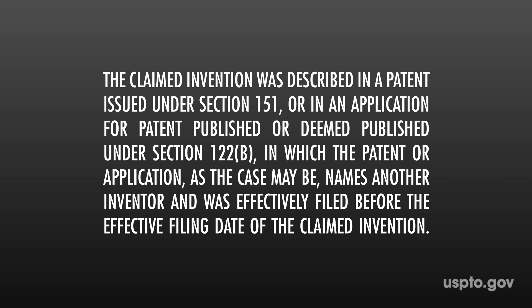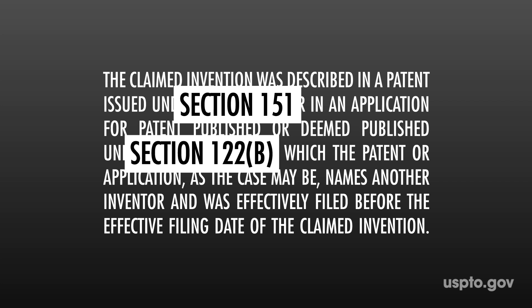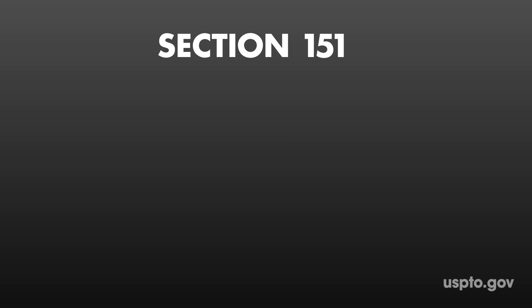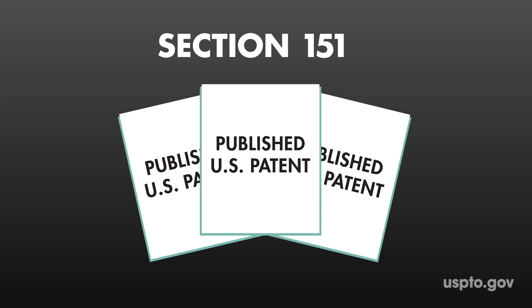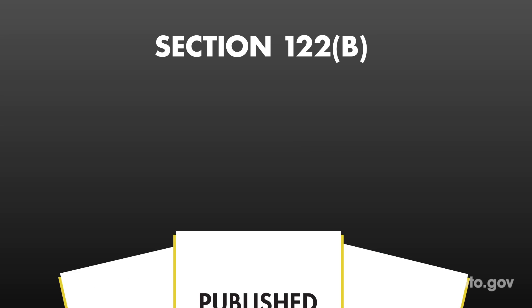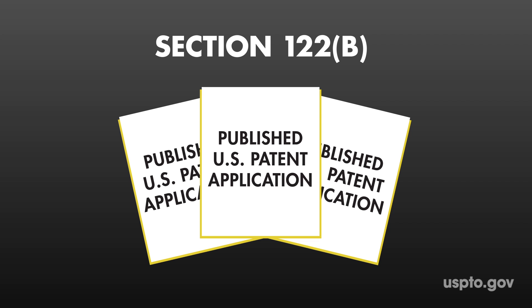We need to look at a couple of things to understand this. See where it says Sections 151 and 122B? These are other sections of patent law. Section 151 refers to published U.S. patents. Okay, easy enough. Section 122B refers to published U.S. patent applications.